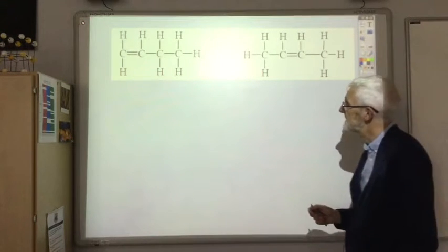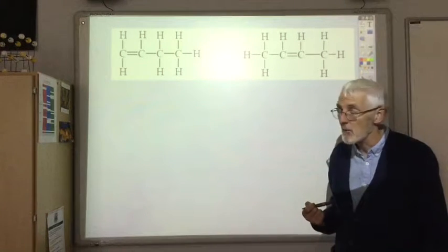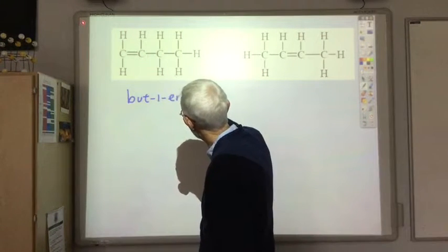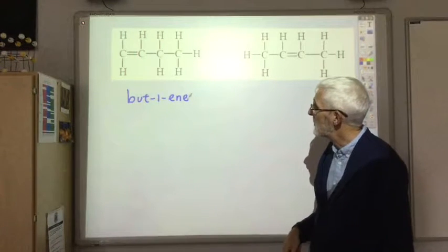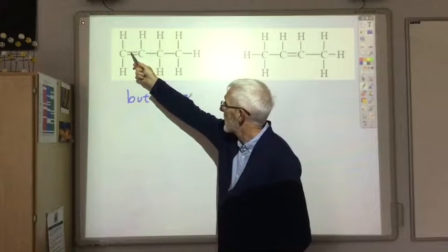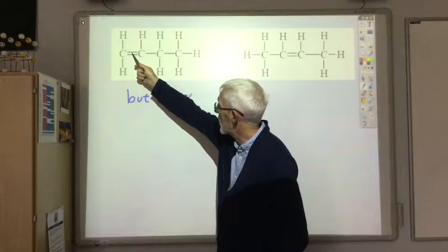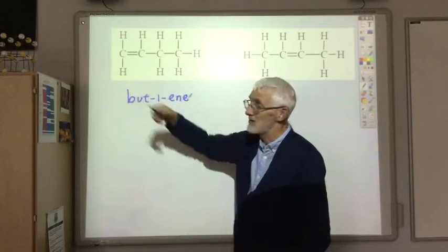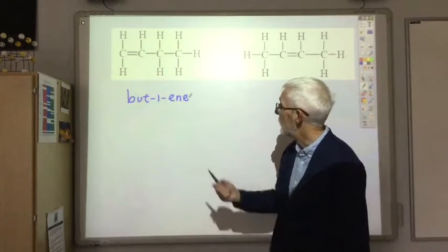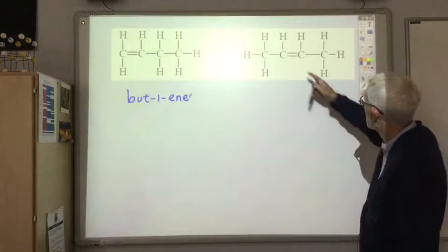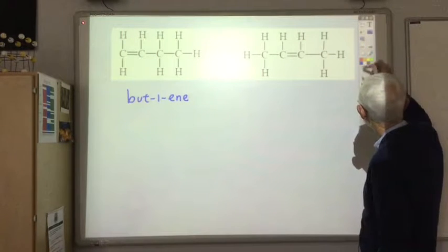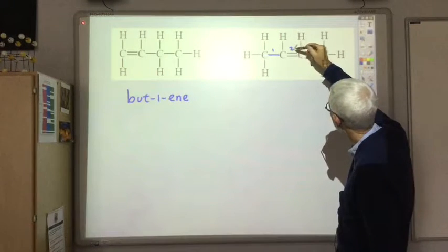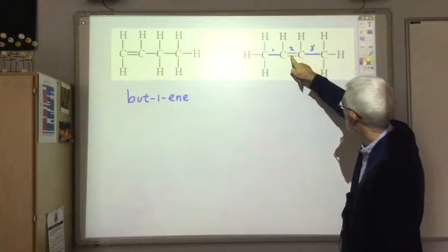The way we name them is you have to name the position of the carbon-carbon double bond. This is but-1-ene, which tells us that the carbon-carbon double bond is on the first carbon-carbon bond. If you numbered from this side it would be 1, 2, 3 - you always number from the end that gives you the lowest number. So it's but-1-ene. Whereas this one, the carbon-carbon double bond is between the second two carbons: 1, 2, 3. So it's but-2-ene.